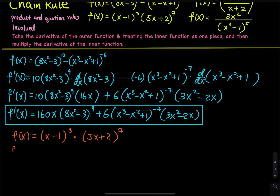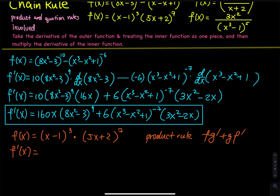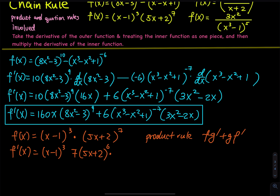So f prime of x — by the way, what is the product rule? The product rule is fg prime plus gf prime. So fg prime means we ignore the x minus 1 for now, and take the derivative of g. The derivative of the seventh power: bring the 7 down, and then 5x plus 2 to the 6th power. And then by chain rule, we have to take the derivative of the linear function 5x plus 2.